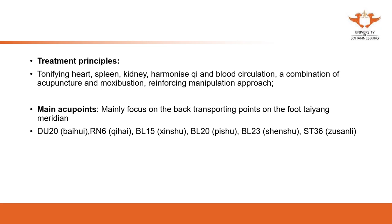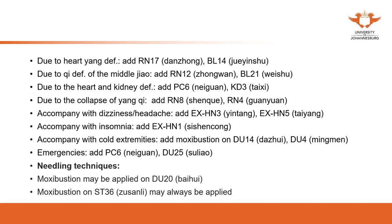BL15 for the heart, BL20 for the spleen, and BL23 for the kidney. For heart Yang deficiency, add Ren 17 and DU14. The needling technique — you can focus on the direction: point the needle downwards or outwards. Do not insert Ren 17 towards left or right unless treating breast problems such as insufficient lactation; for the Ren meridian, needle facing downwards or outwards.